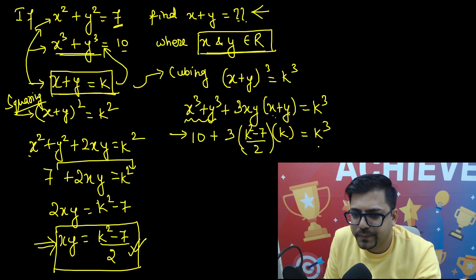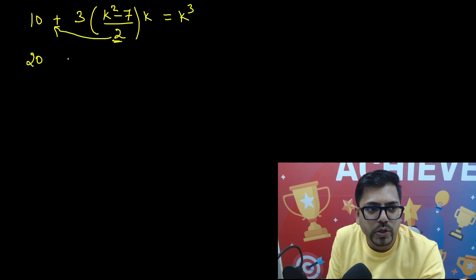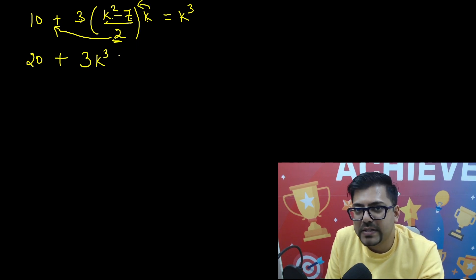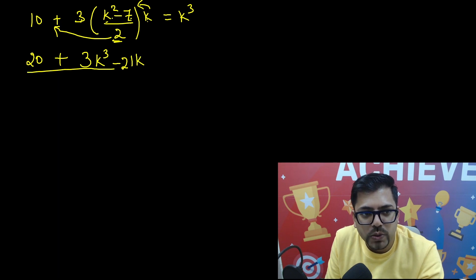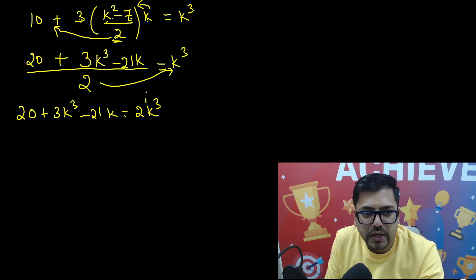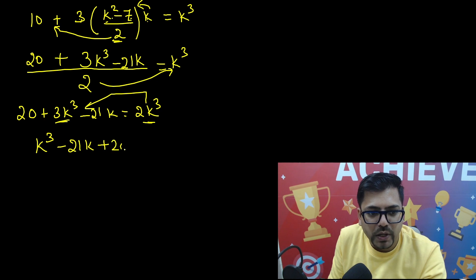Now let's simplify. Taking 2 as LCM: 20 plus 3k cubed minus 21k equals 2k cubed. Moving 2k cubed to the left side: 3k cubed minus 2k cubed minus 21k plus 20 equals 0. So finally we have the cubic equation k cubed minus 21k plus 20 equals 0.